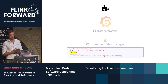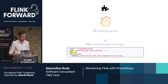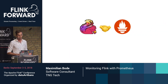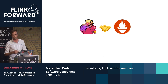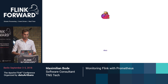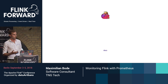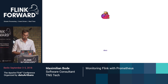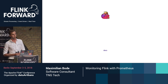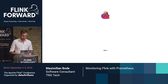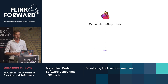Flink also works well together with Prometheus. If you know a little bit about monitoring Flink, you might know that Flink has a built-in metric system with support for different tools — commercial ones like Datadog, or other ones like Graphite or Prometheus. To use this, you basically need to configure a reporter for your monitoring system. In this case, you're going to use the Prometheus reporter.